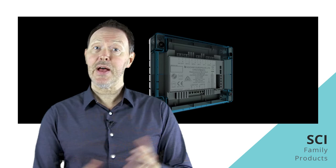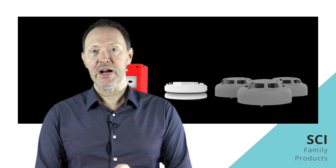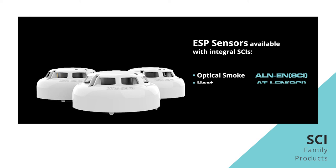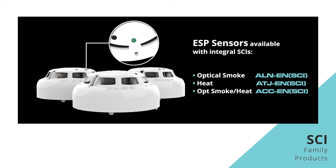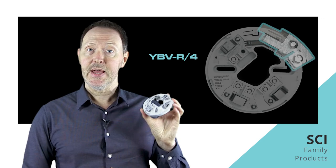Each of our standard addressable ESP sensors are also available as versions with integral SCIs. There's an optical smoke, a heat, and a smoke heat multi. The LEDs on these devices are tri-colored: green when polling, red when in alarm, and amber when the isolator is activated. Now to operate as SCI sensors, all three of these devices must be mounted on our YBV-R/4 mounting base. That's because this base has the additional terminal required to connect the SCIs within each device.